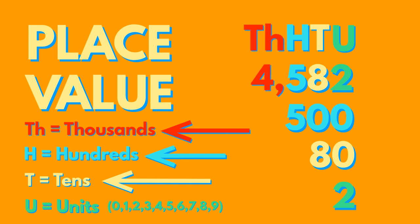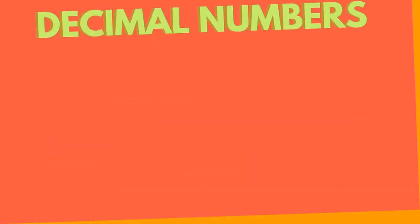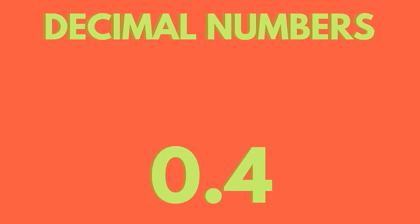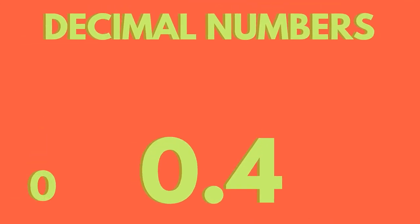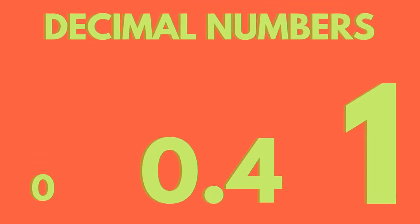Decimal numbers are those that are more than zero but are smaller than 1. They are always displayed on the right-hand side of the decimal point. After the decimal point, we can continue to add columns to the right for ever smaller numbers: tenths, hundredths, thousandths and so on.